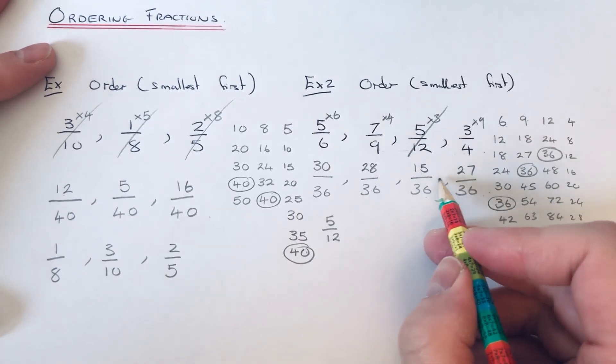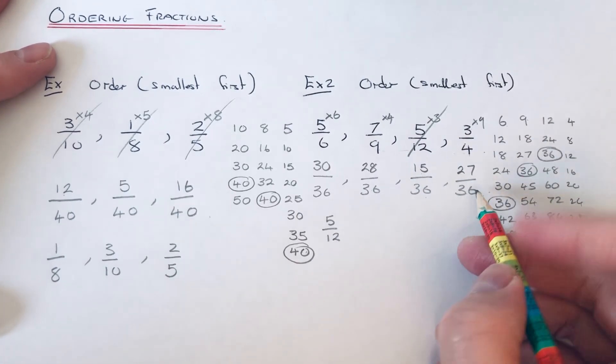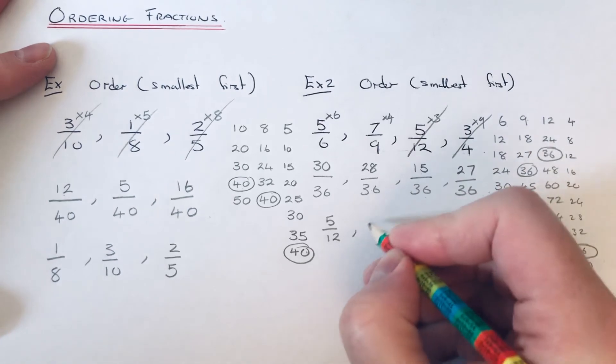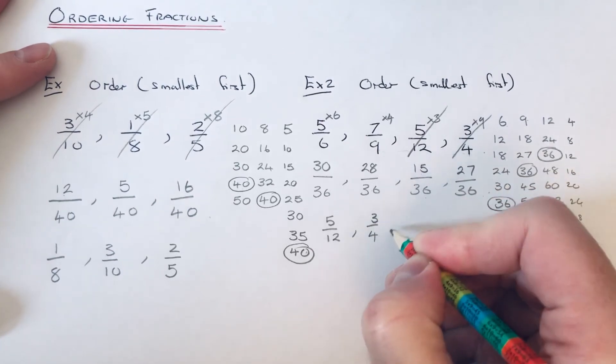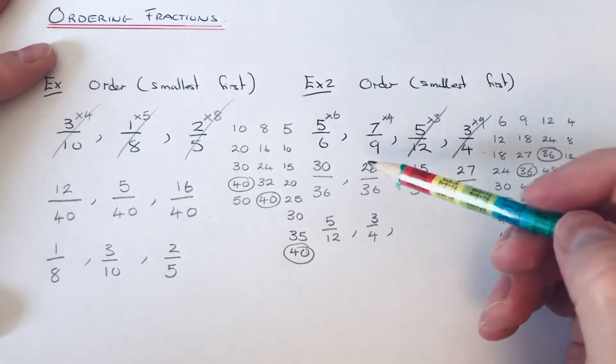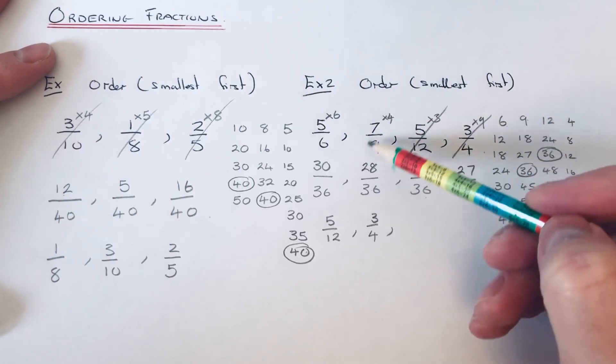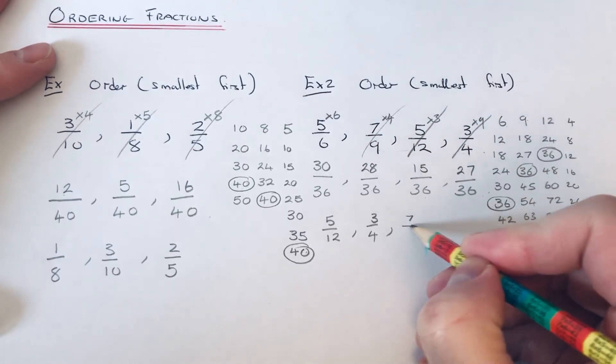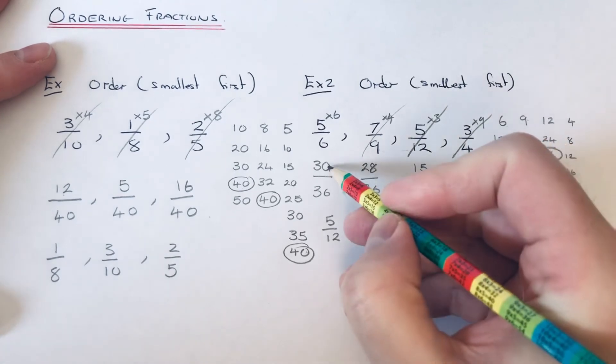Our next smallest would be 27 out of 36, which was 3/4. Our next smallest is 28 out of 36, which was 7/9, and our biggest one was 30 out of 36, which was 5/6.